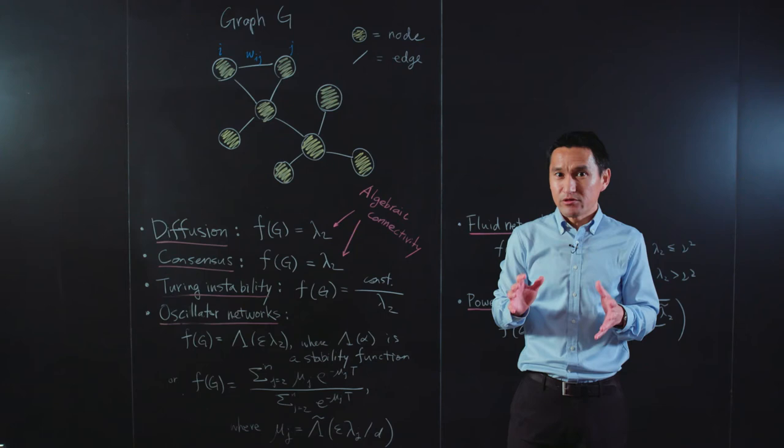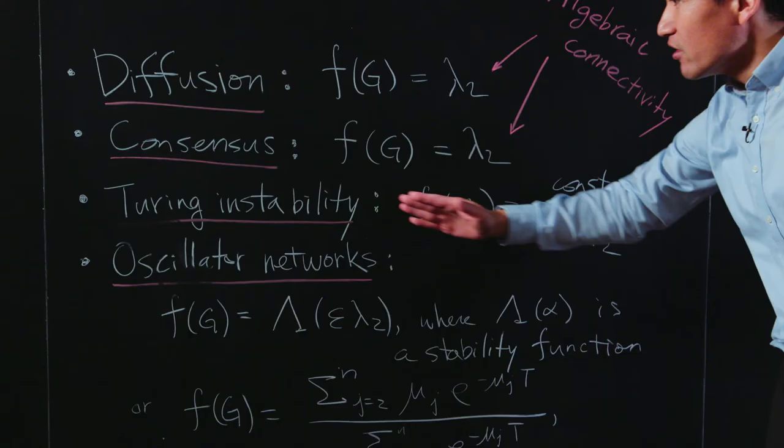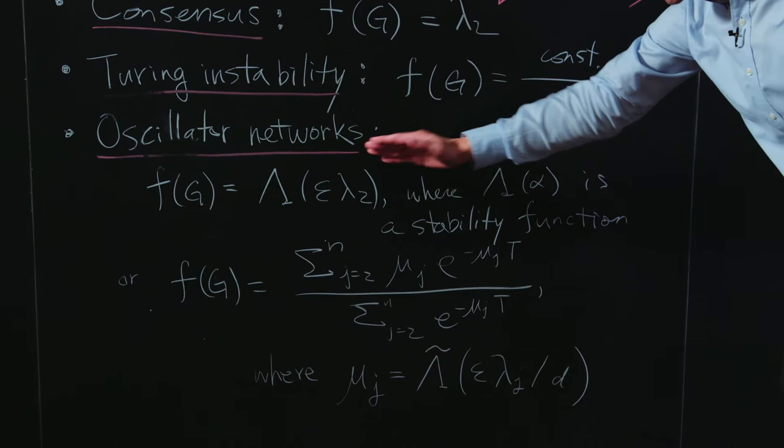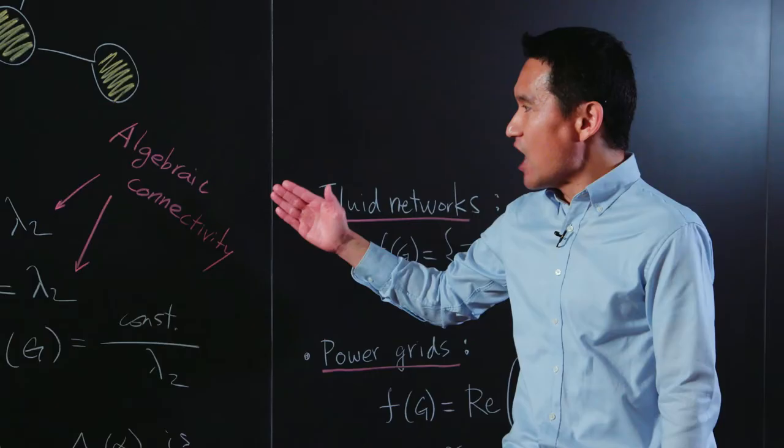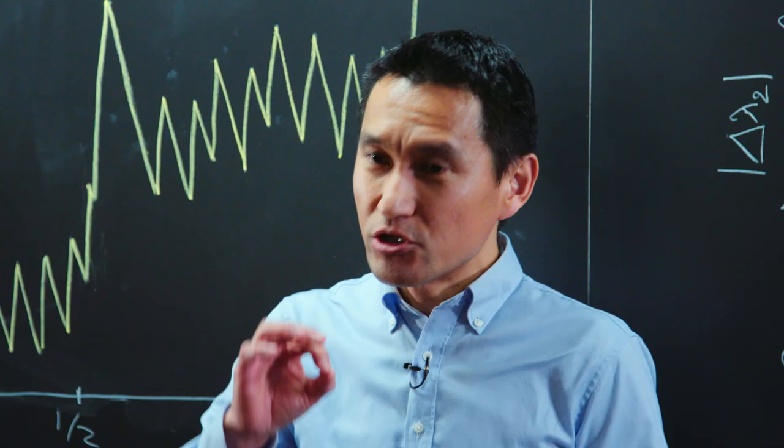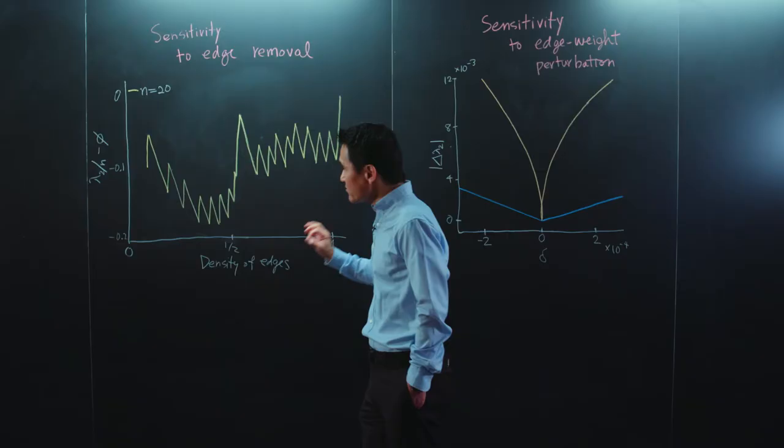As a concrete example, consider network processes that are governed by the eigenvalues of a coupling matrix. For instance, the rate of convergence to uniform distribution when something diffuses from node to node, the onset of pattern forming Turing instability on a network, and various aspects of network synchronizability are all determined by an important eigenvalue called the algebraic connectivity. So let's focus our attention on networks optimized to maximize the algebraic connectivity.